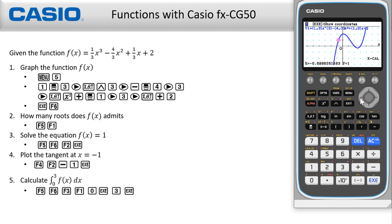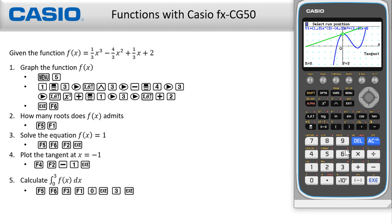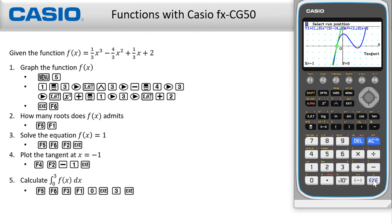In part four, to plot the tangent at x equals negative one, simply press Sketch on F4. Subsequently select F2 to choose the tangent option. To specify the point of tangency, press negative one — a small pop-up will appear — then Execute. You also have the option to change the point of tangency using the arrow keys.